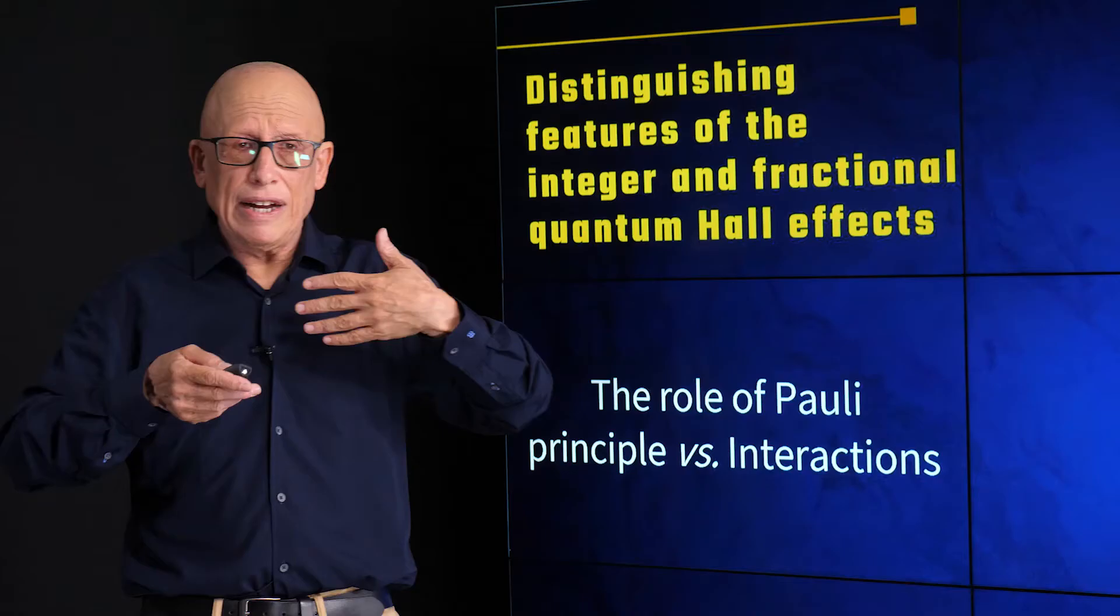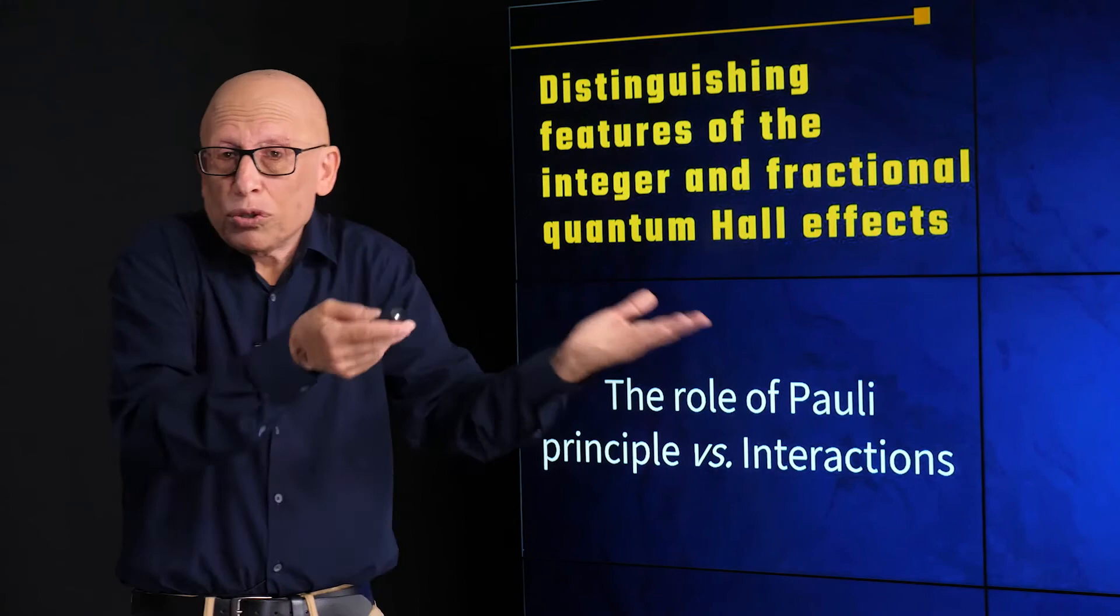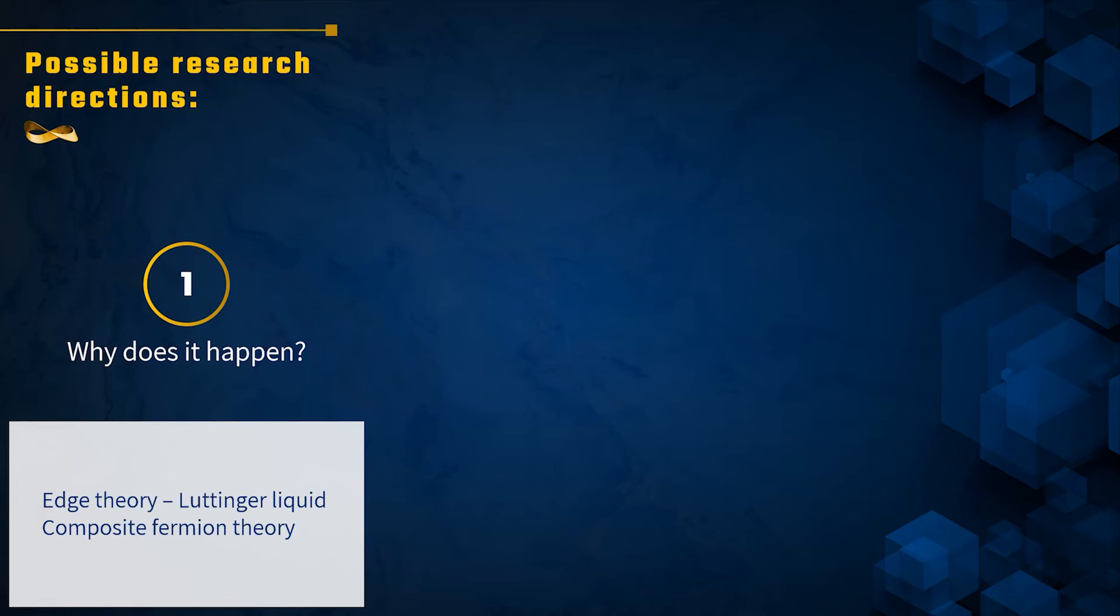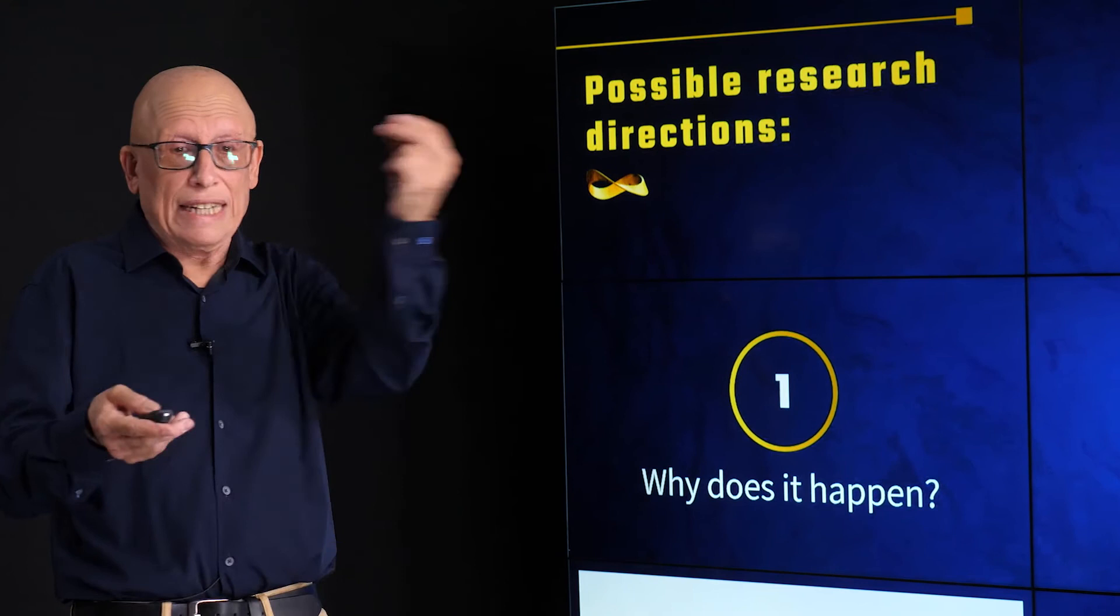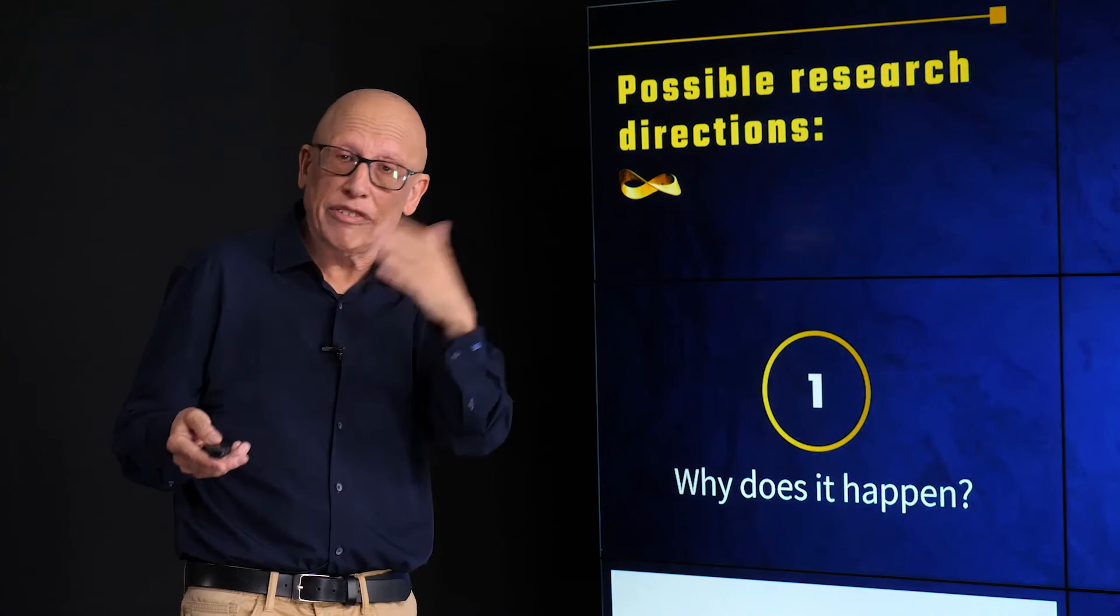Generally, when you see an effect like that, you can imagine four directions of research you may attempt in order to understand or in order to enjoy this effect. The first direction is you can ask yourself, why does it happen? Why do we get this precise quantization? Why do we get those particular values, 1 over 3, 2 over 5, and so on?